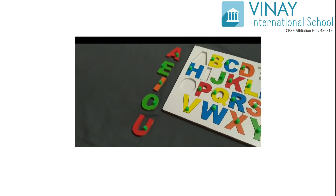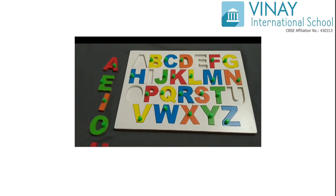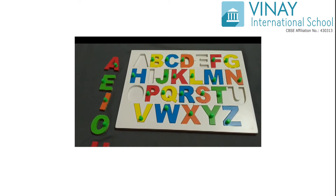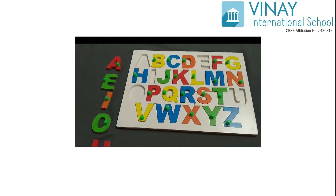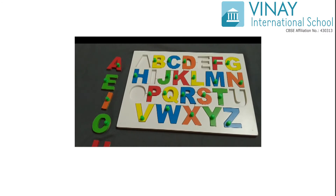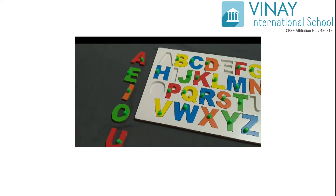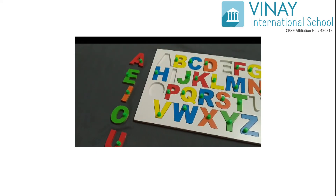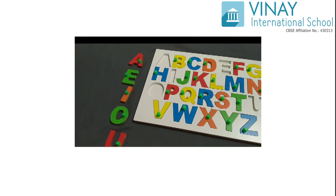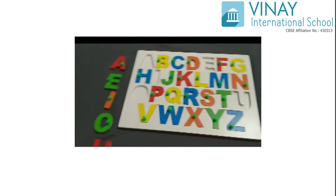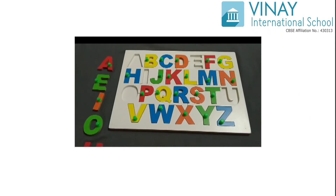आपने Hindi में स्वर और व्यंजन तो study किया ही होगा। स्वर यानिकि अ, आ, इ, ई, उ, ऊ, ए, ऐ, ओ, औ — ये सारे स्वर हैं, और क, ख, ग, घ — वो सारे व्यंजन हैं। तो हमारे English में A, E, I, O, U ये हमारे स्वर हैं और बाकी के जो बचते हैं 21 Consonants वो हमारे व्यंजन हैं।